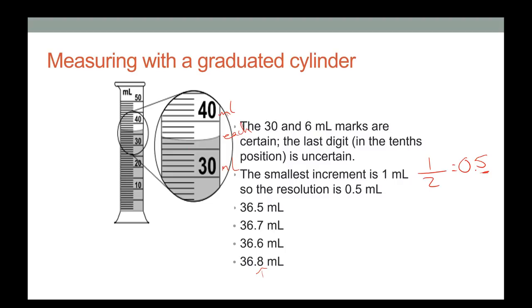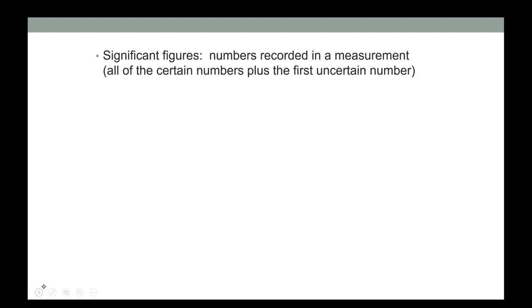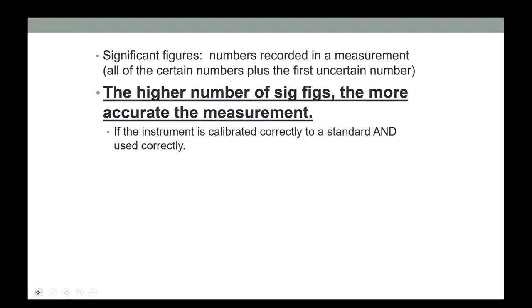Significant figures are all numbers recorded in a measurement — the certain numbers plus the first uncertain number. We'll have an entire lesson on significant figures, but the more sig figs you have, the more accurate your measurement becomes.